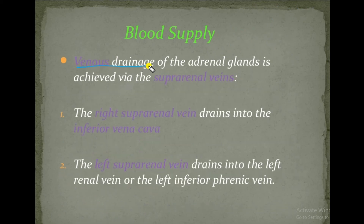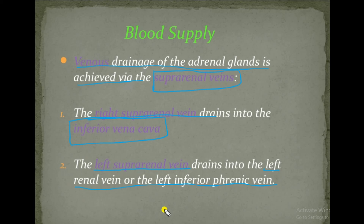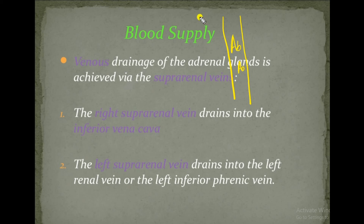The venous drainage of the adrenal gland is achieved via suprarenal veins. The right suprarenal vein drains into the inferior vena cava, while the left suprarenal vein drains into the left renal vein or left inferior phrenic vein. The inferior vena cava is located to the right of the abdominal aorta, and it drains blood from the right kidney through the right renal vein.